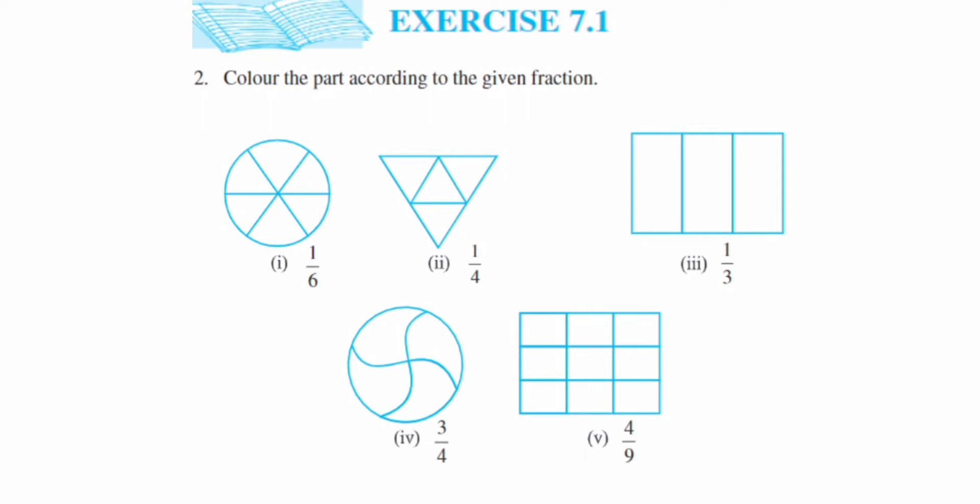In the first one they have given 1 upon 6. Remember, the denominator represents how many total parts are there in a whole figure. So here 6 means 6 parts are there. You can count here: 1, 2, 3, 4, 5, 6. So out of 6 they are asking us to color how many parts? 1. We have to check the numerator.